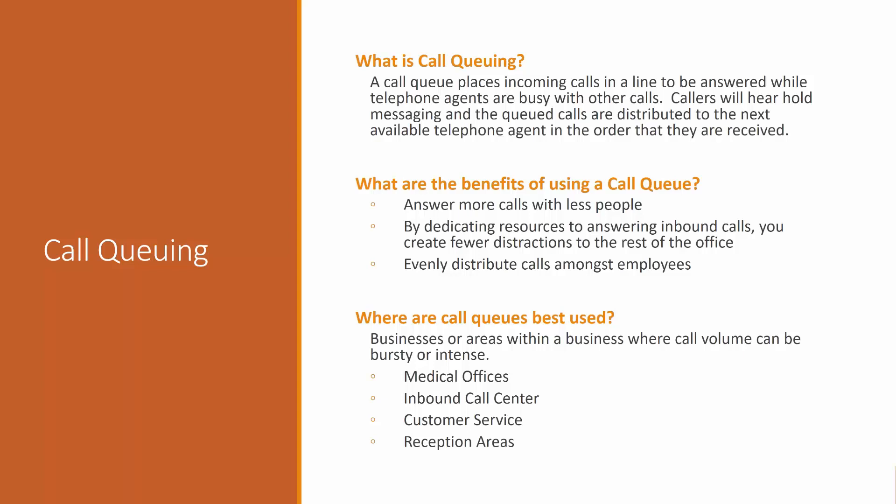By dedicating resources for inbound calls, you're creating fewer distractions for the rest of the office. Instead of fifteen phones ringing everywhere, calls ring to the people best suited to answer them — no more wondering whether you should get that call. Lastly, you can more evenly distribute calls among employees. With a queue and the right algorithm, you can prevent one person answering fifty calls while another answers five.